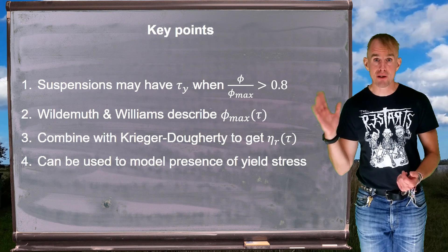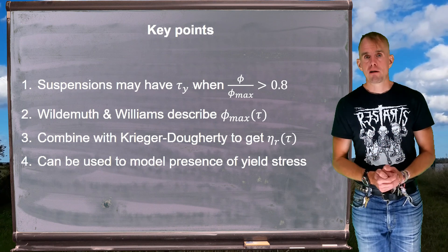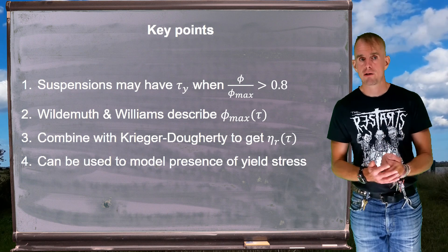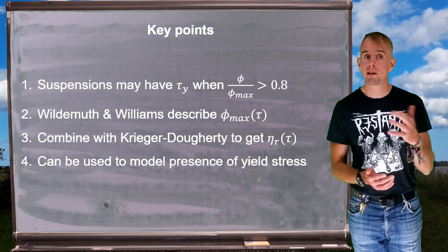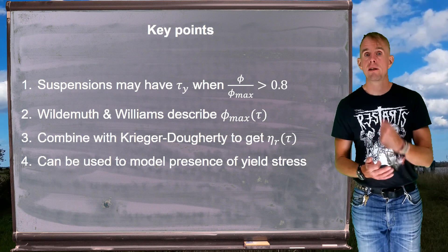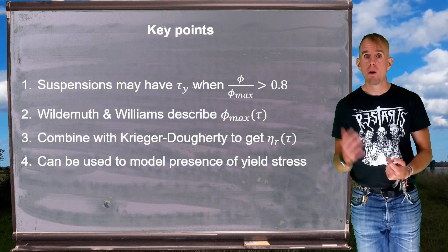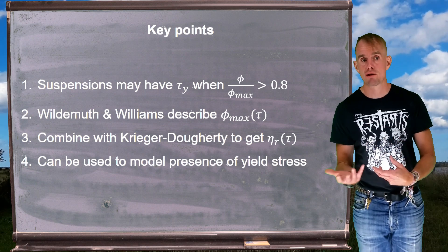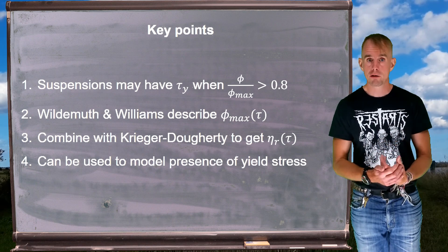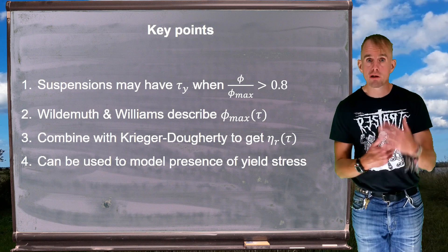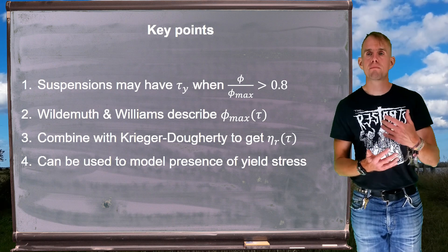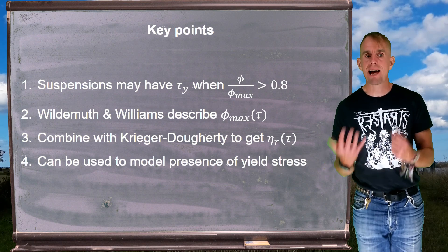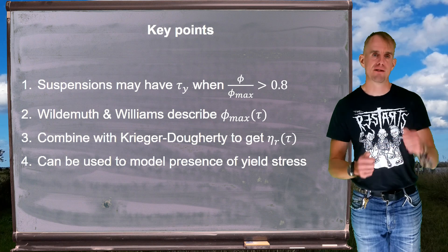So, a few key points. It's commonly experimentally observed that suspensions have the presence of yield stress when the packing fraction, the ratio between φ and φ_max, is greater than about 0.8. One of the relationships that one can use to describe the variation of φ_max as a function of stress is that due to Wildermuth and Williams. If this expression is combined with Krieger-Dougherty, we get a model that describes relative viscosity as a function of stress and can be used to model the presence of a yield stress.